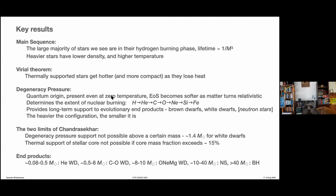The slope of pressure versus density becomes smaller as the density rises. When it turns relativistic, it becomes much softer than at lower non-relativistic densities. Degeneracy pressure determines the extent of nuclear burning in the stellar core. The main stages are hydrogen to helium, helium to carbon, carbon to oxygen, oxygen to neon, neon to silicon, silicon to iron. How many of these stages actually occur in a star is determined by the dominance of degeneracy pressure, which is determined by the mass of the star.